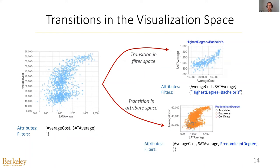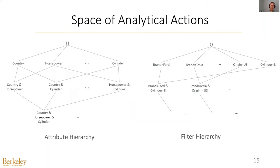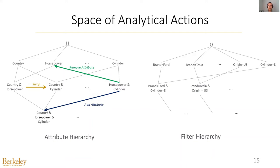Or we can add additional attributes to further break down the data points by colors. In general, each analytical action corresponds to a move in the attribute or filter hierarchy. For the attribute space, when we go down the hierarchy we add attributes; we can also swap or remove attributes to explore all the states in the attribute hierarchy. For the filter space, we can perform similar analytical actions to explore the states in that hierarchy.